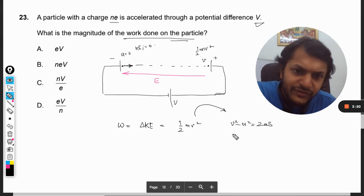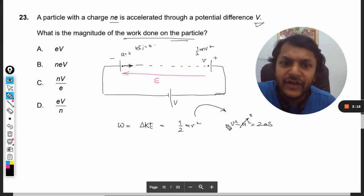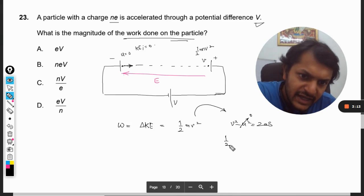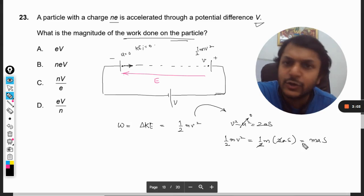Multiplying by half m on both sides, half mv squared equals half times m times 2as. This cancels, so it becomes mas. Now ma is force, F equals ma.